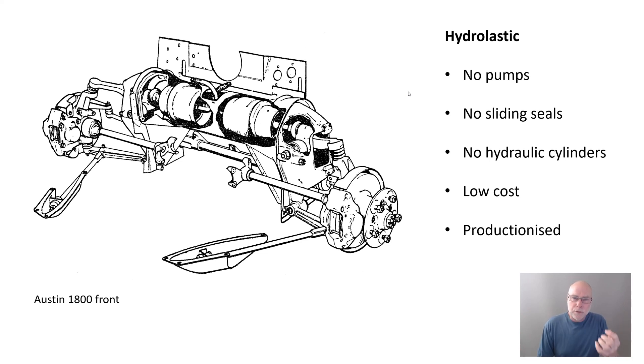It was a relatively low-cost system. There are some studies that show it was cheaper than the equivalent conventional suspension. And the fact it had all these advantages means it could be productionized. It was put into production in millions of cars. That's one of the indicative things of a successful suspension system. Anyone can come up with designs that are expensive, complex, difficult, and could never be put into production.